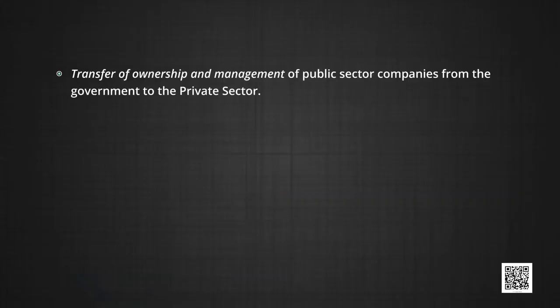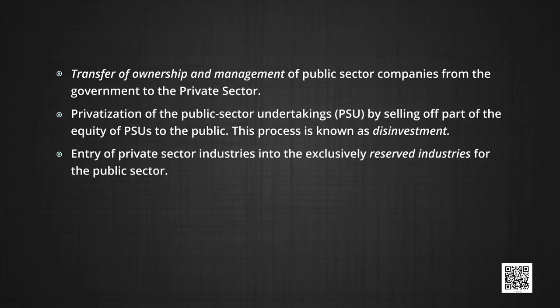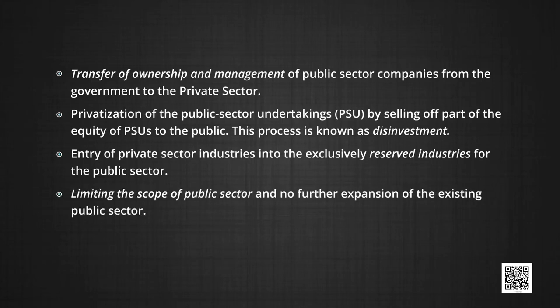Number 1: transfer of ownership and management of public sector companies from the government to the private sector. Number 2: privatization of the public sector itself by selling part of the equity of PSUs — that is, public sector units — to the public. This process is known as disinvestment. Number 3: entry of private sector industries into areas exclusively reserved for the public sector. And finally, limiting the scope of the public sector and no further expansion of the existing public sector.